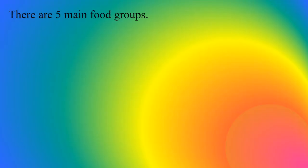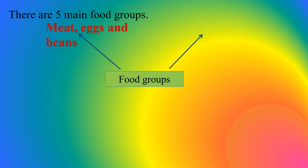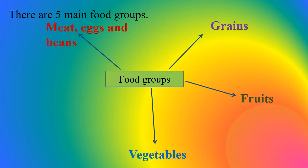There are 5 main food groups. The first one is meat, eggs and beans. The second one is grains. Then fruits, vegetables, and dairy products.